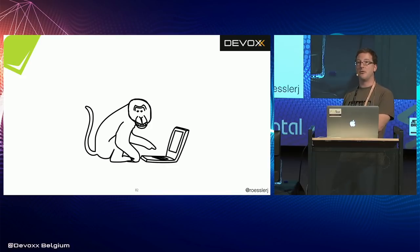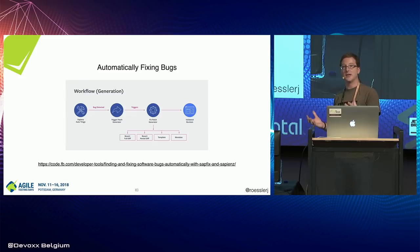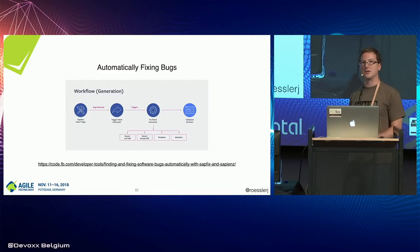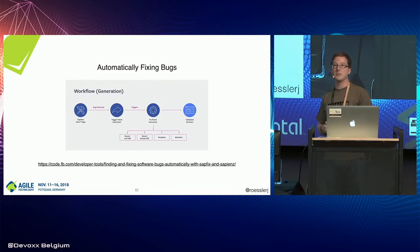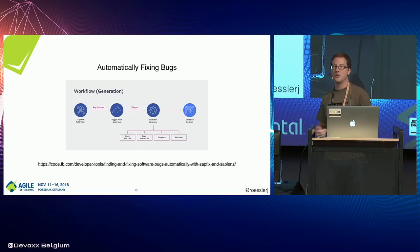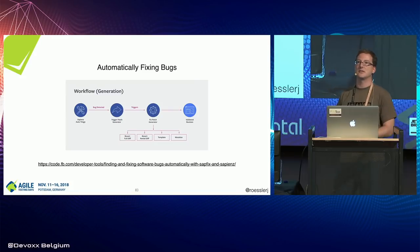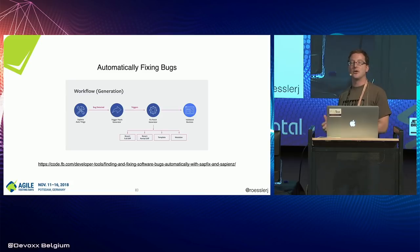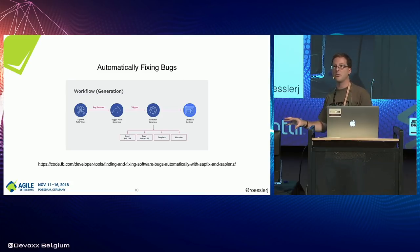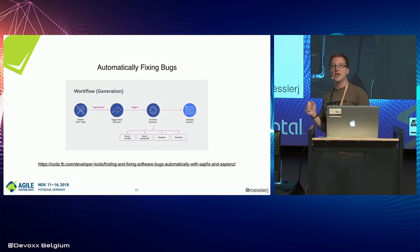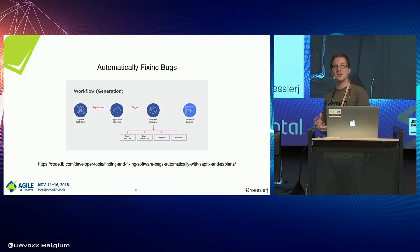Going further, Facebook has a tool that automatically generates fixes. When a null pointer exception is found, the fix is typically two lines — something like 'if null, return something.' The AI tests the application, finds a technical problem, generates a candidate fix, and runs all other tests to verify nothing else changed. If the only change is that the crash disappears, the fix is valid and gets applied automatically to the codebase.